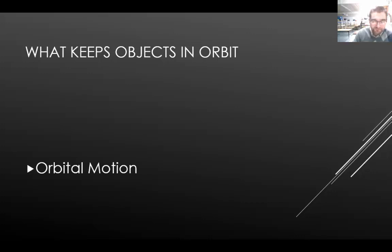Orbital motion. Why do Earth and the Moon remain in orbit? Newton concluded that inertia and gravity combine to keep Earth in orbit around the Sun and the Moon in orbit around our Earth.